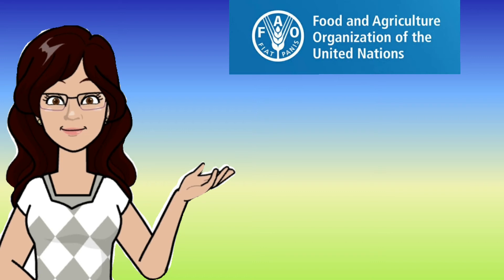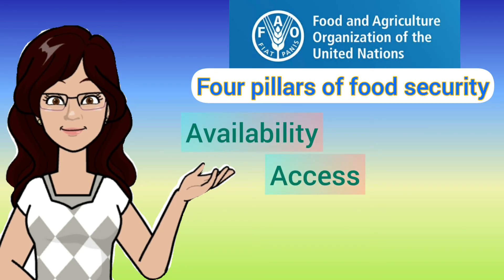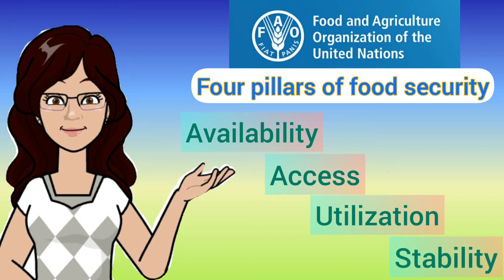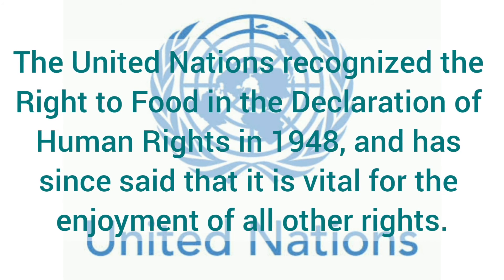The Food and Agriculture Organization of the United Nations identified the four pillars of food security as availability, access, utilization, and stability. The United Nations recognized the right to food in the Declaration of Human Rights in 1948.